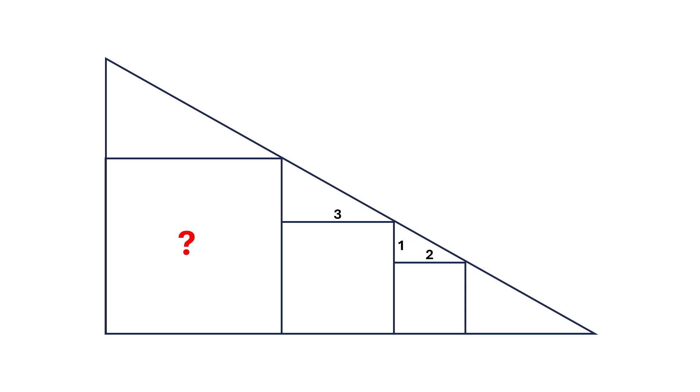Now, let's consider this unknown length and call it x. Looking at the two right-angled triangles formed, you'll notice that they are similar triangles since they share the same angles. So, we can set up a proportion. x over 3 is equal to 1 over 2.